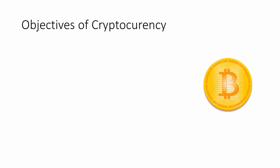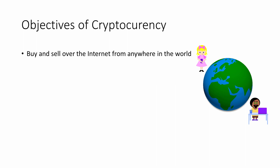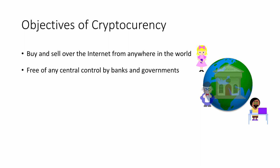The original objectives of Bitcoin included that people would be able to buy and sell goods and services over the internet, quickly and easily, from anywhere in the world. We can do that now with fiat currency, but Bitcoin would be free of any central control. Banks and governments would have no say in how it was managed and used.